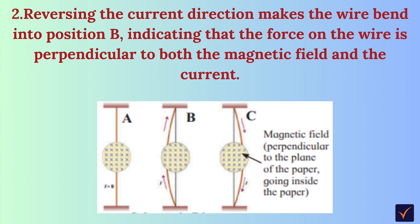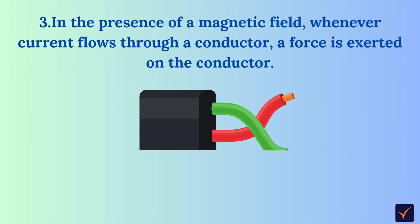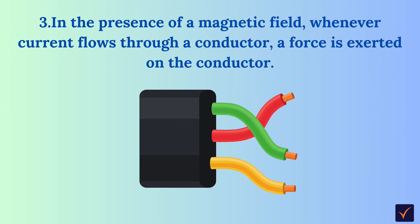In the presence of a magnetic field, whenever current flows through a conductor, a force is exerted on the conductor. Reversing the current direction reverses the force on the conductor.